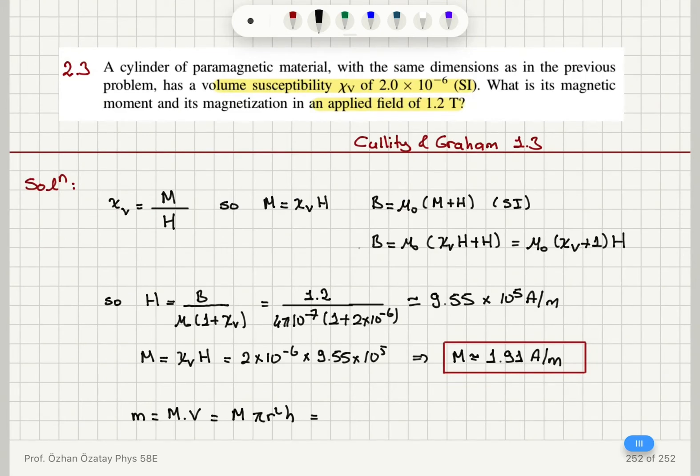So I note that from the previous problem, h is 6 centimeters and radius is 1.25 divided by 2 centimeters. So if we substitute this here: 1.91 ampere per meter times π times r squared, (1.25 over 2) squared.